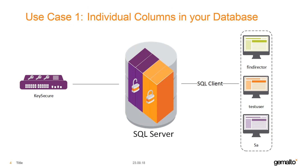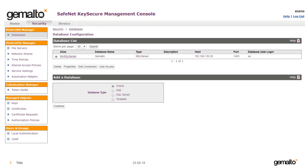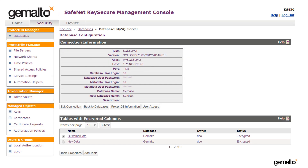In this use case, we are defining access to the original data for FinDirector, and access only to the encrypted data for everyone else, including the database administrator. On the KeySecure Management Console, the database server has been registered, and clicking on it shows the tables with encrypted columns that have been defined.